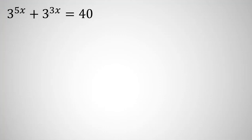So, 3 to the 5x plus 3 to the 3x equals 40. If we try to find an answer, for example check x equals 0 or 1, we will see it doesn't work.